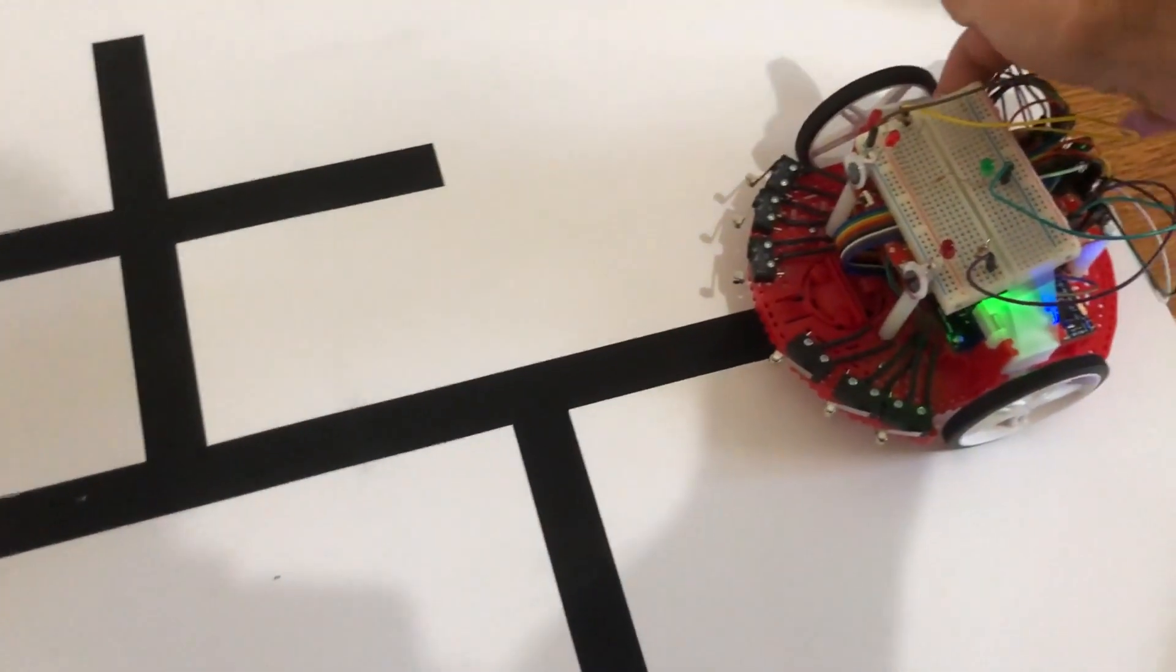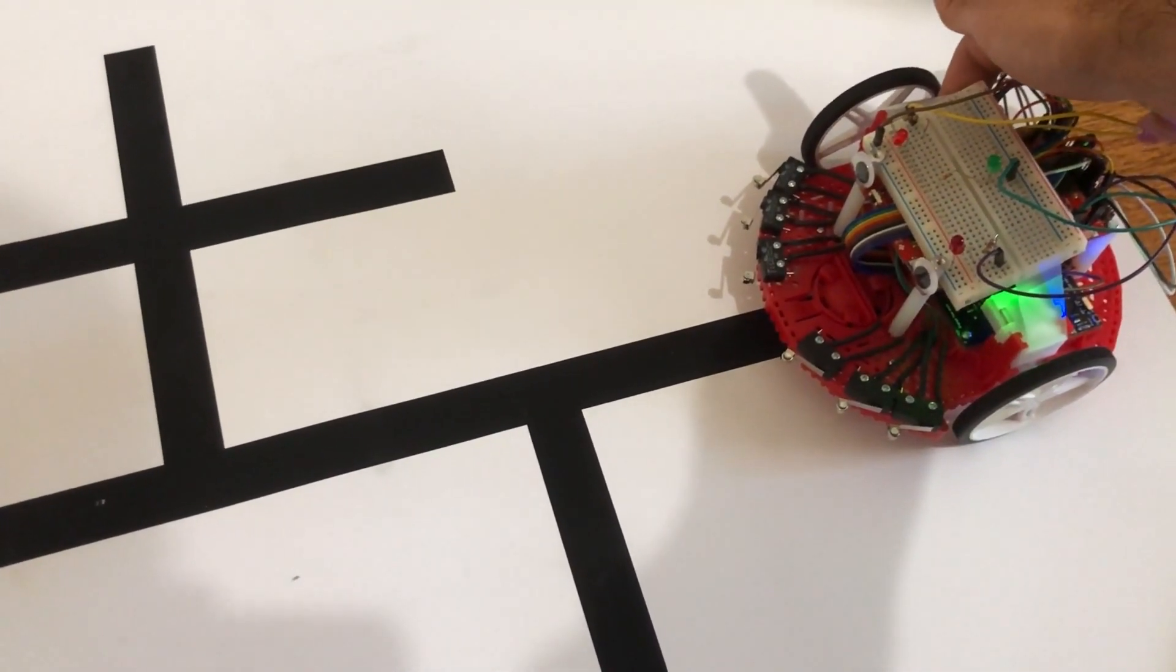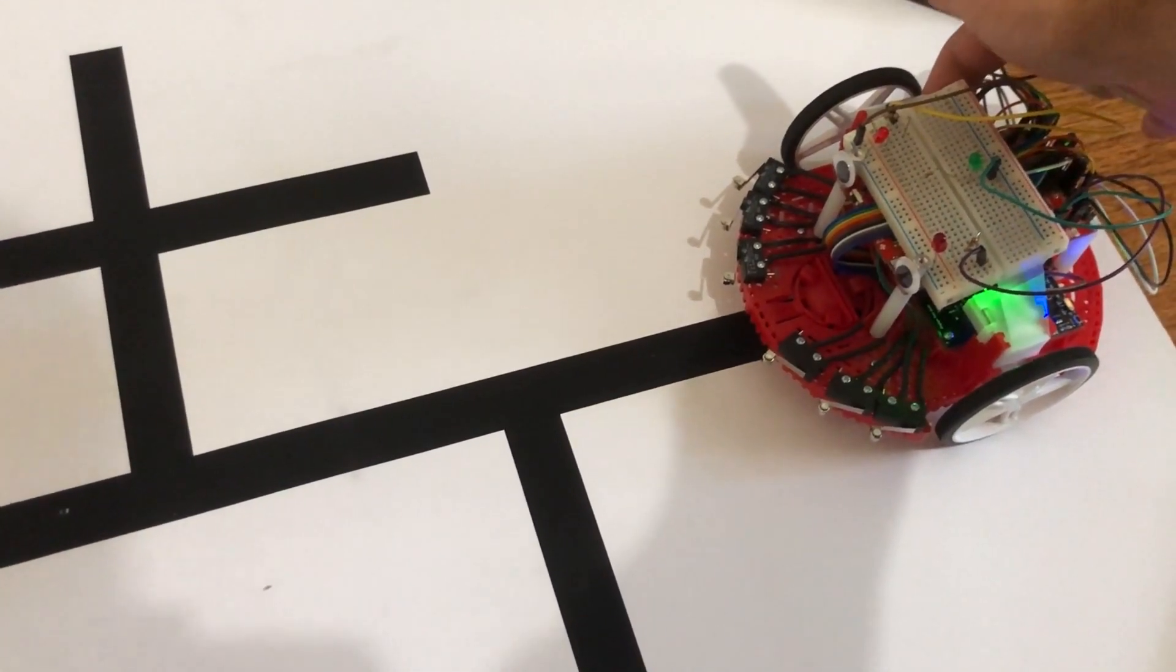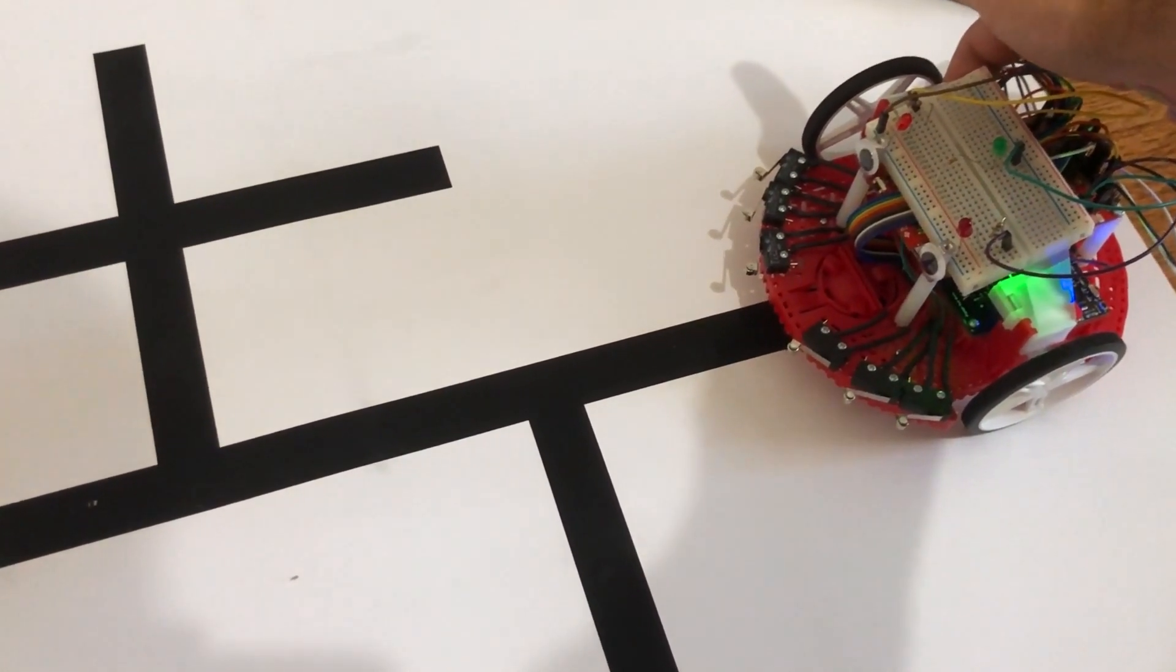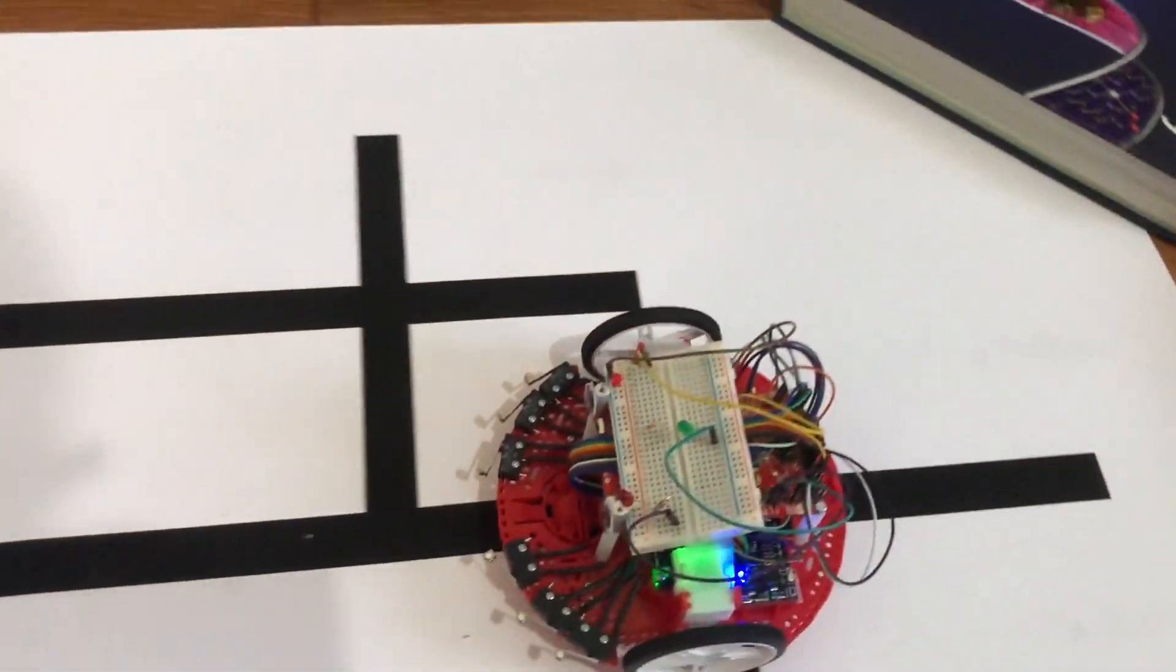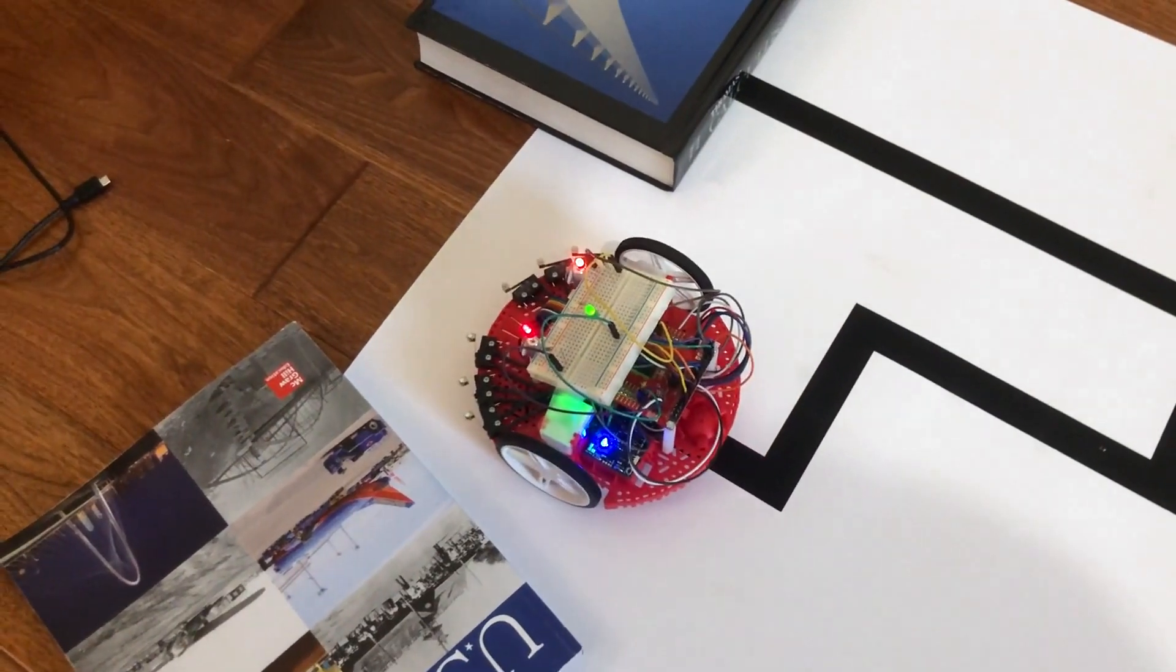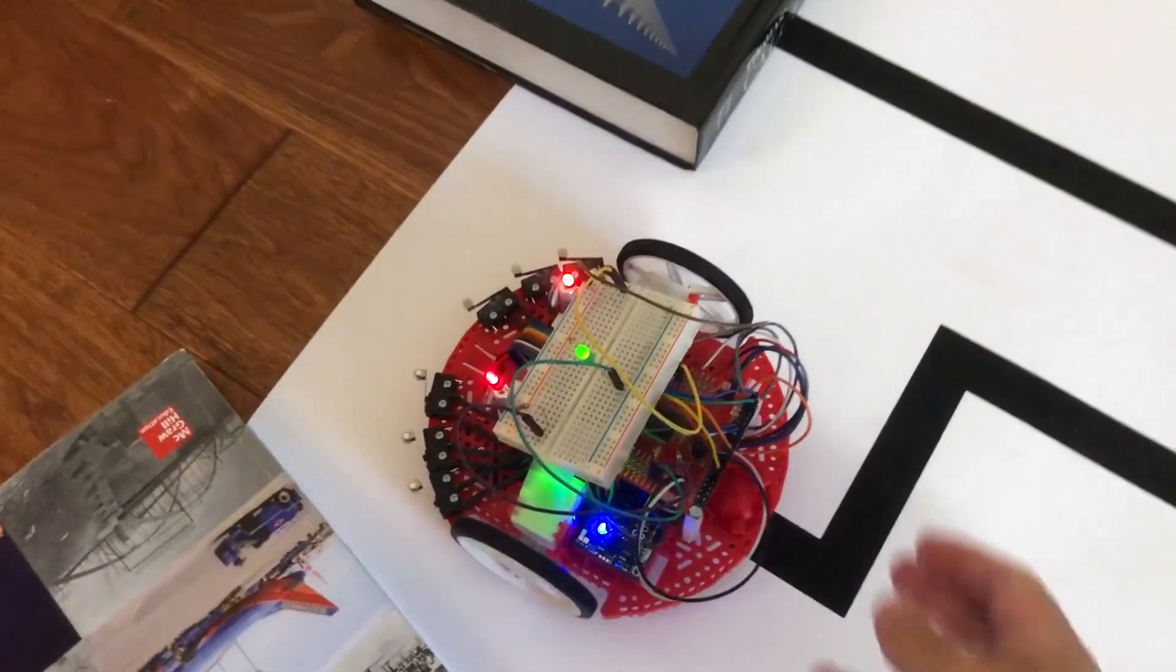Now let's show you that it remembers the shortest path to get back to the treasure from the same starting spot. I'm pressing the right button to tell it to show us the shortest path. You can see it skipped the left intersection and has found the treasure again.